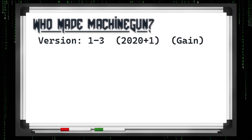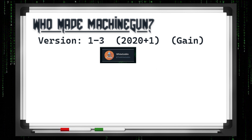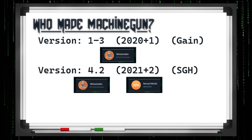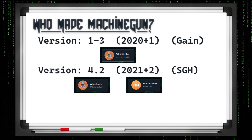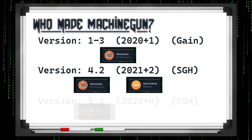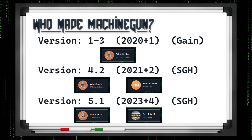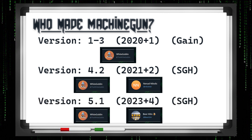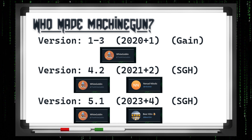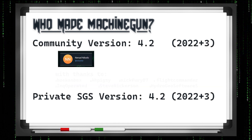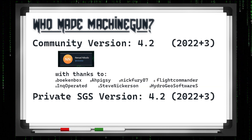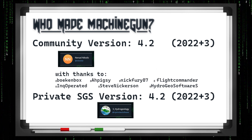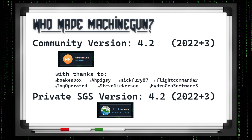Who made Machine Gun? I made versions 1 through 3 back in 2020 — you can see them on Viral Trading. Then Nenad joined my team and we put out 4.2. Then I teamed up with Bearcoin and we've been working on 5 since then. It's important to note there was also a community version that Nenad did, and then a private SGS version that Hydrogeology did.